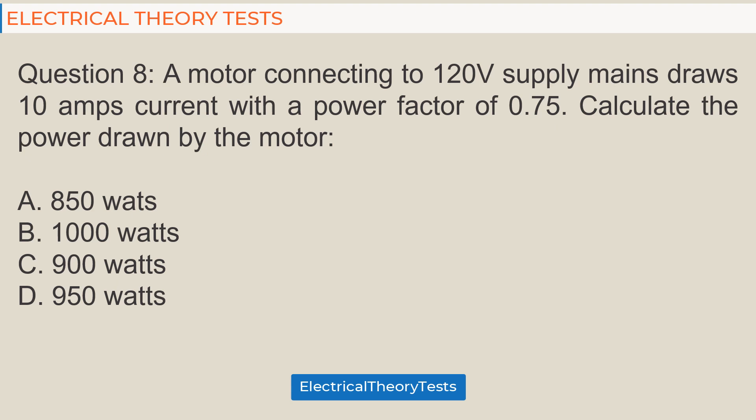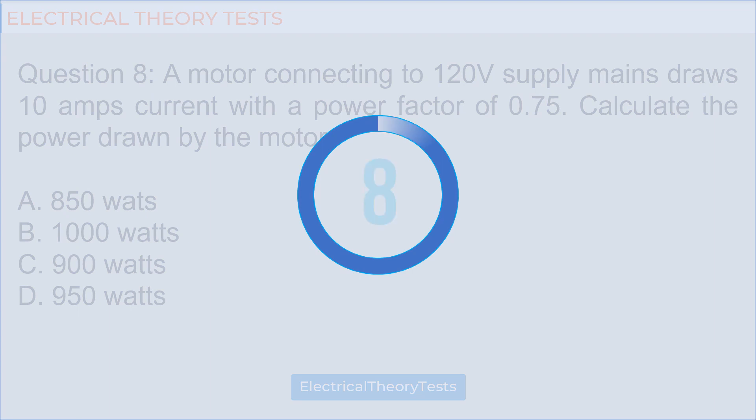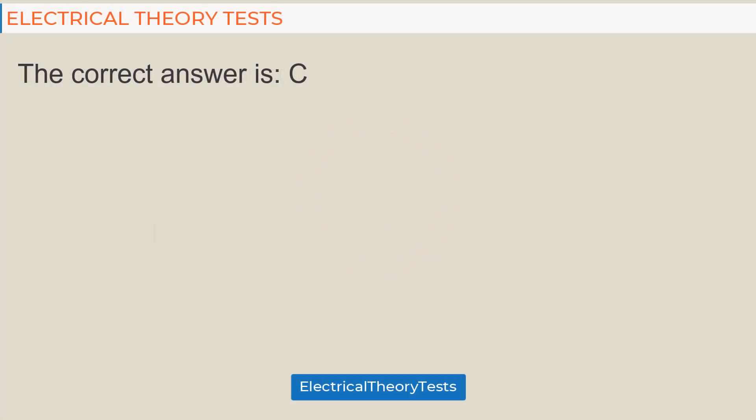Question 8: A motor connecting to 120 volts supply mains draws 10 amps current with a power factor of 0.75. Calculate the power drawn by the motor: A. 850 watts, B. 1000 watts, C. 900 watts, D. 950 watts. The correct answer is C.